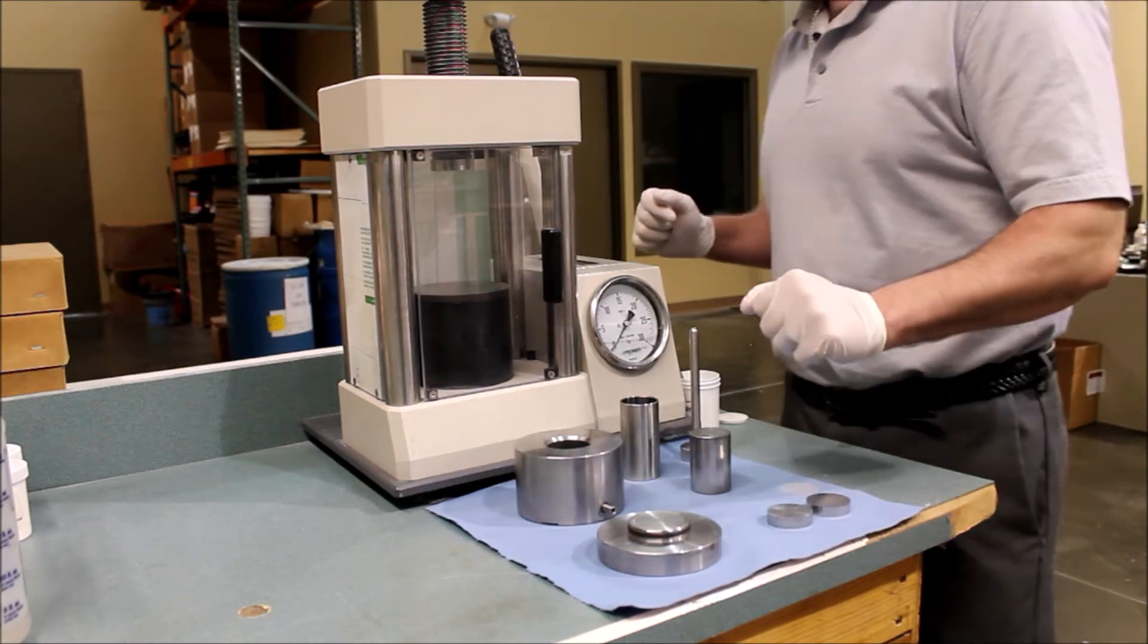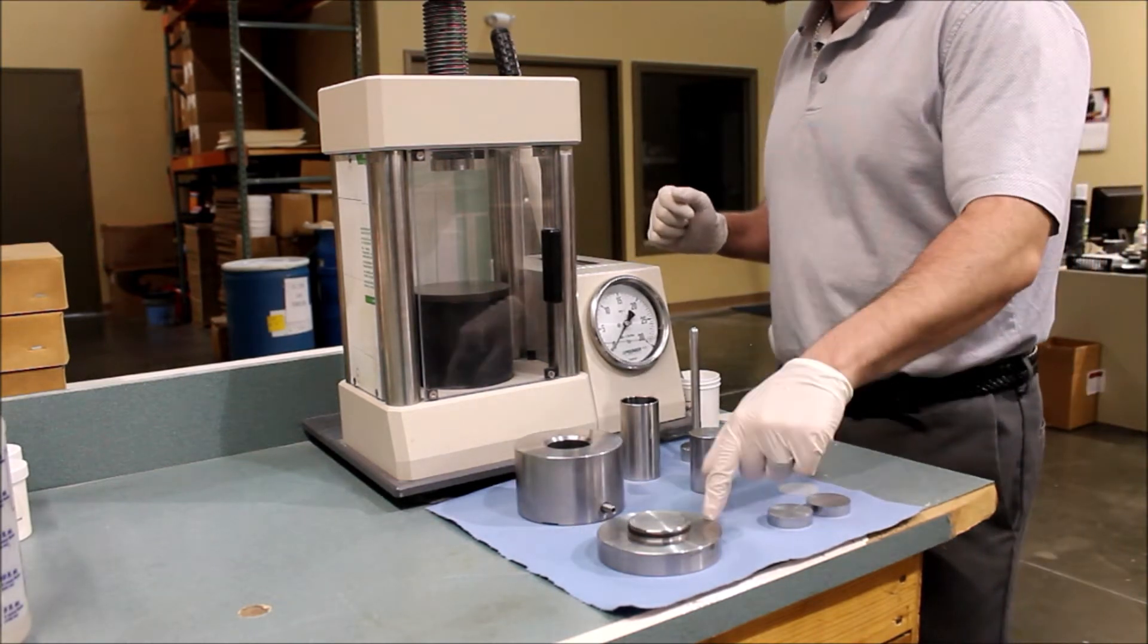Today we will be learning how to make a pellet using a 25-ton manual press and a stainless steel die set.